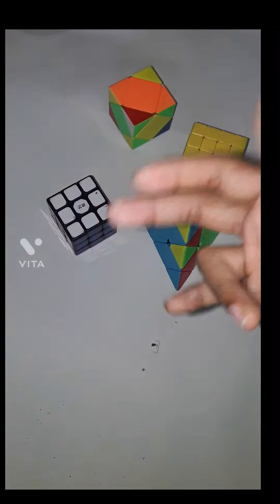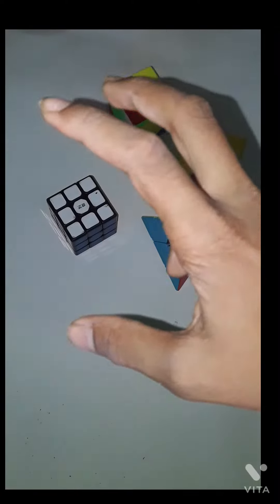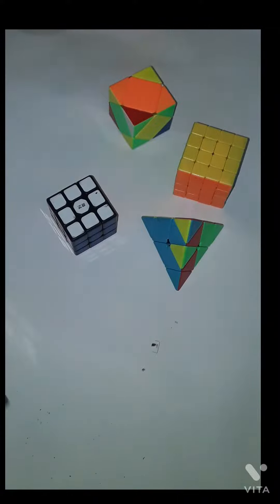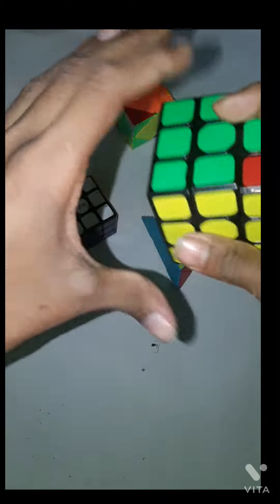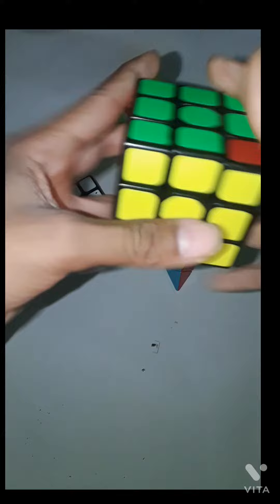Hey guys, welcome back to the channel. Today I'll show you how to do a T-perm. Let's go. So here the T-perm looks like we have two headlights on the left, two blocks in the front, and two blocks in the back.